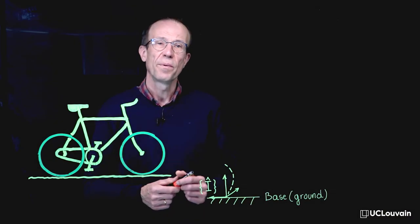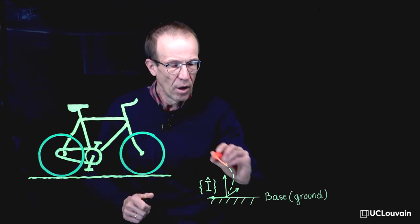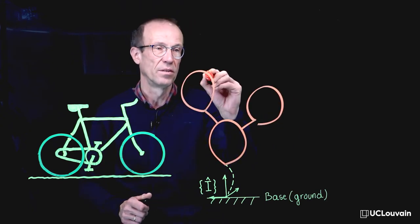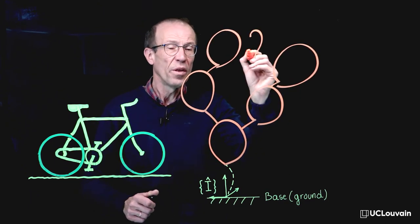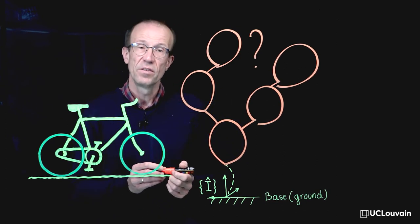The first step of the study is to identify and number the bodies of the system we would like to analyze. To decide whether or not a body must be taken into account in the envisaged study.